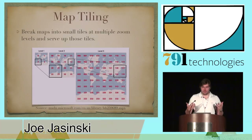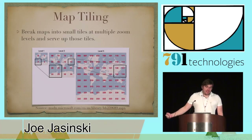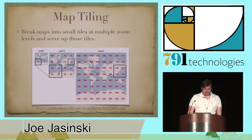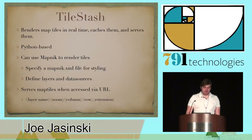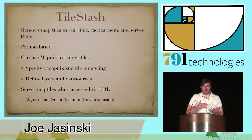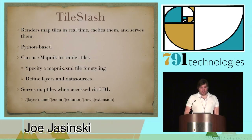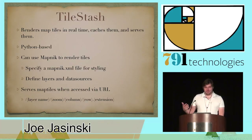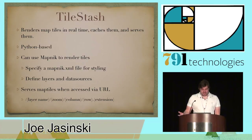Map tiling — you may be familiar with it from Google Maps. As you zoom into a mapping application, it loads image tiles from a server, and as you zoom in, the tiles get more detailed. There are open source solutions for map tiling, and one popular Python-based solution is called TileStache. It renders map tiles in real time, caches them, and serves them as you access them. You can use Mapnik as the back-end rendering engine and set a Mapnik XML style file to dynamically add your styles and data sources.